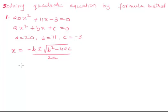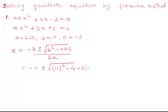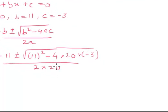Substituting the values, x equals minus 11 plus or minus under root of b squared — which is 11 squared — minus 4 times a, which is 20, times c, which is minus 3, all over 2a, which is 2 times 20.